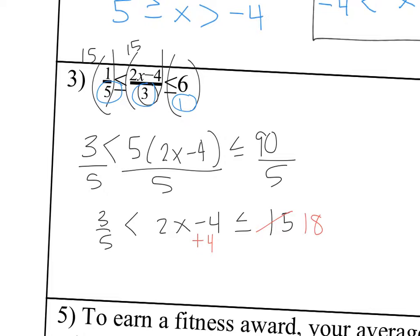So now I'm going to add 4 to each side, all 3 parts. So 3 fifths plus 4. So this is going to be 4 and 3 fifths. Or I could write it as an improper fraction, which is 23 fifths is less than 2x is less than 22. So I'm going to divide everything by 2. So I'm going to have 23 fifths divided by 2, which is the same thing as multiplying by 1 half. So it's going to be 23 tenths is less than x is less than 11.